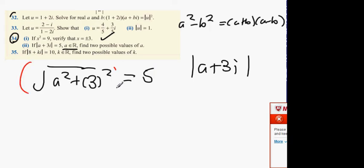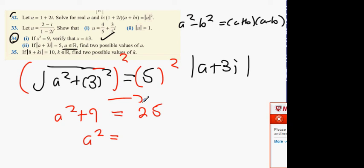So what we're going to get is a squared plus 9 equals 25. And now you're going to get a squared equals anybody? 16. a has to be 4.